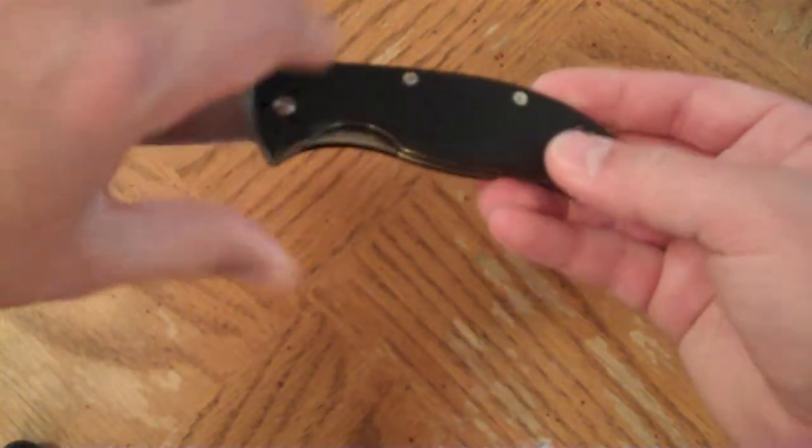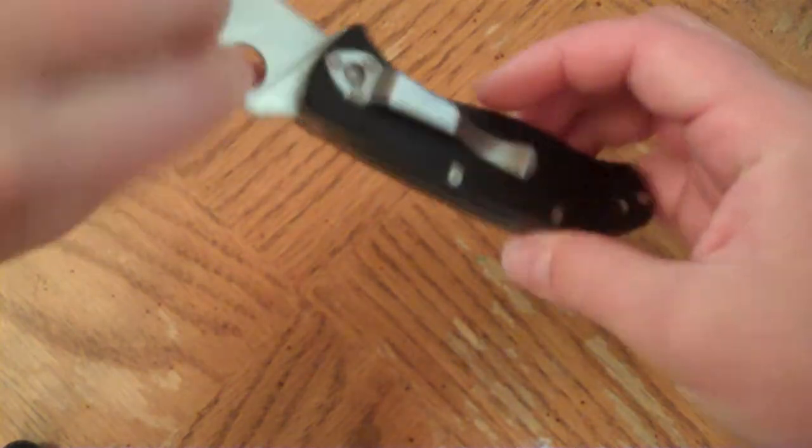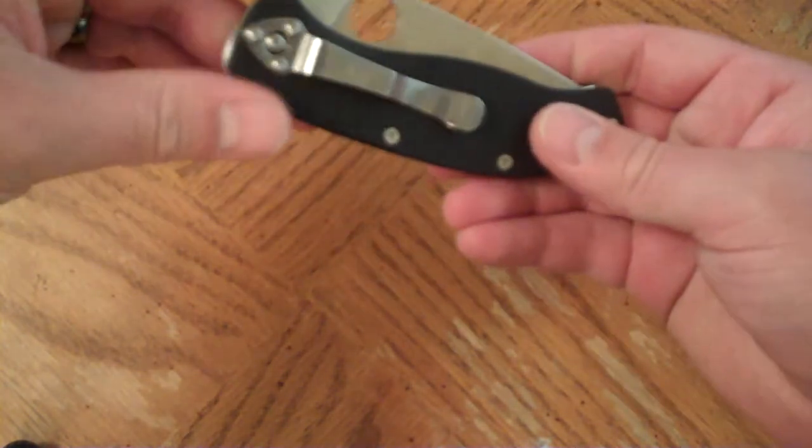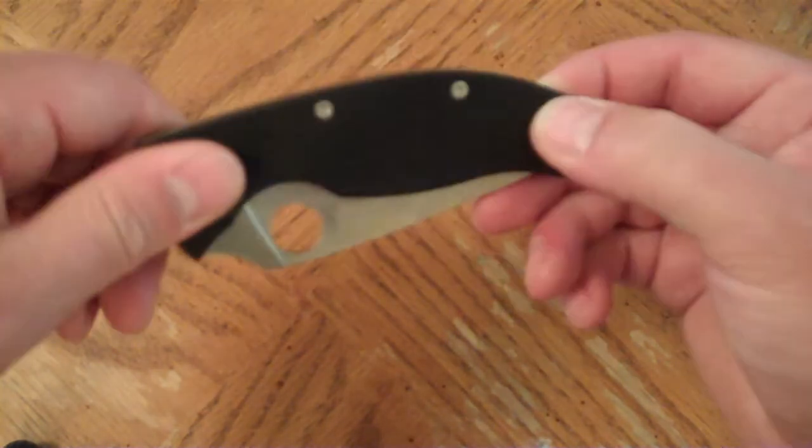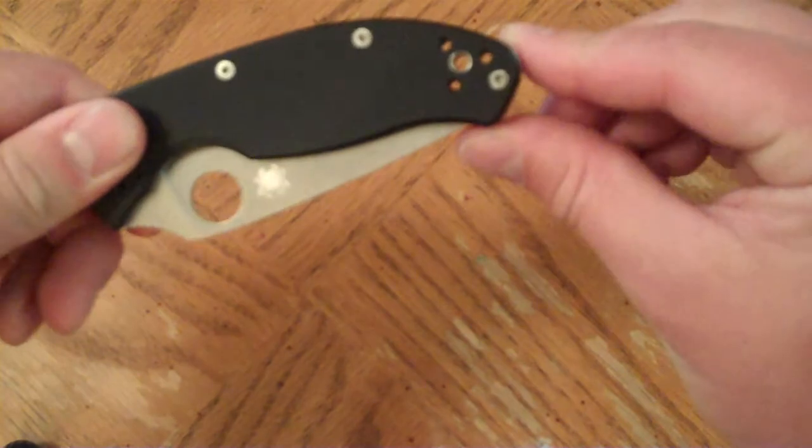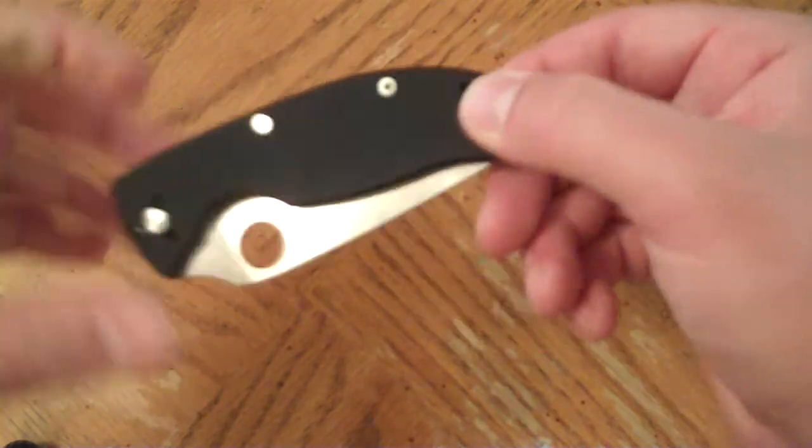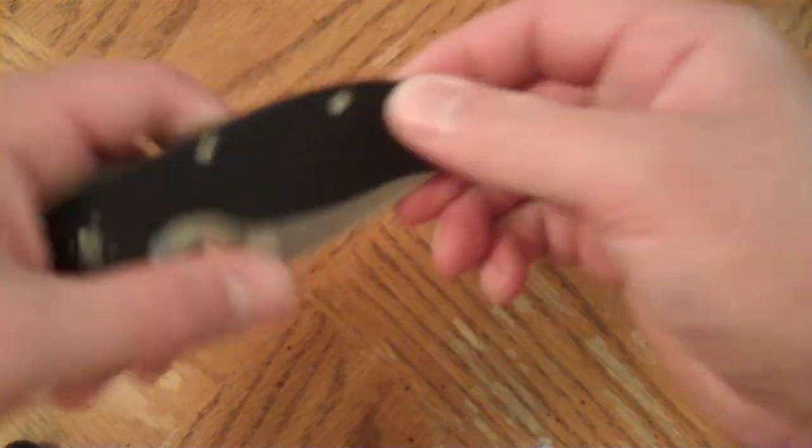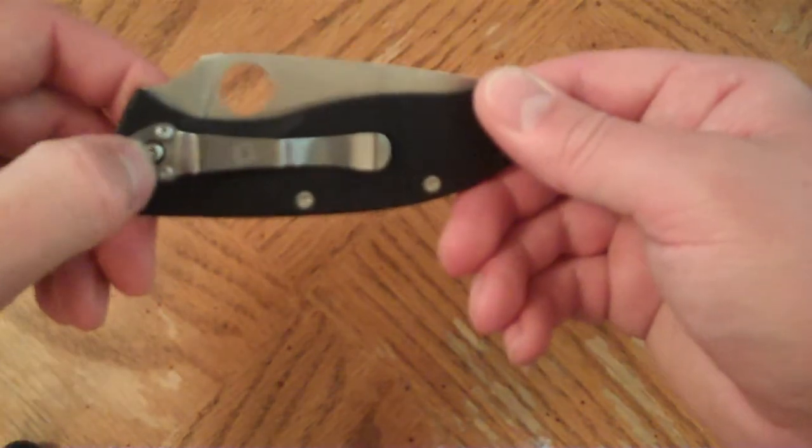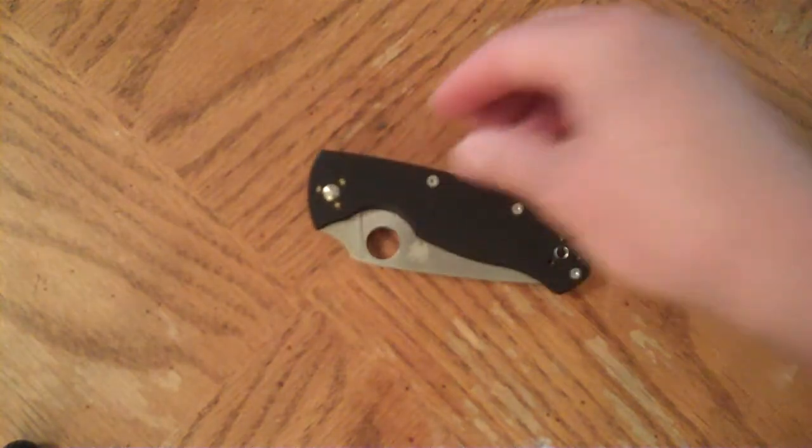You can move the pocket clip all four places. So, good to go there. You have a hole here. It'll go around your lanyard hole, so that's pretty cool. If you do put a lanyard in and you move it to a tip-up carry, your pocket clip will go through your lanyard hole, through that hole in the center there. So, pretty cool. Unique design.